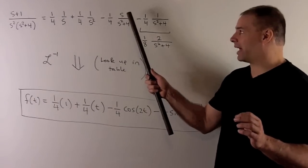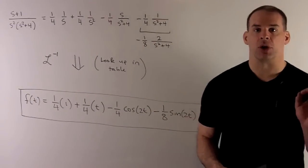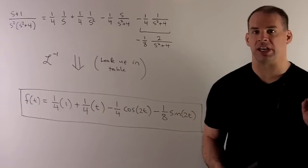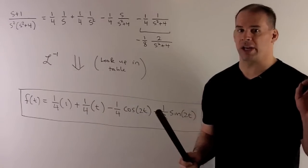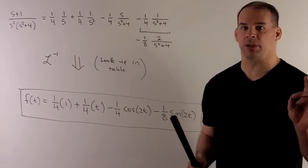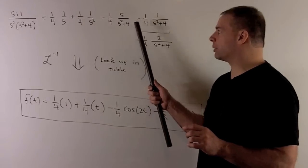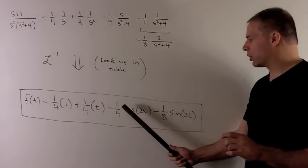Then, we have s over s squared plus 4. That's going to go with cosine of 2t. So, Laplace transform of cosine of at is going to be s over s squared plus a squared. So, we'll get a cosine 2t.